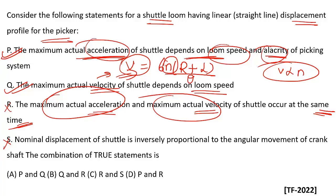This is an important formula — numerical questions are often asked directly using it, where n, r, l, and θ are given and you must find the actual velocity of the shuttle. Option A (P and Q) is correct.